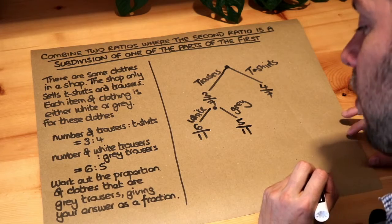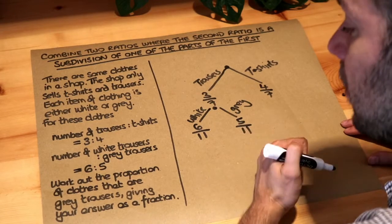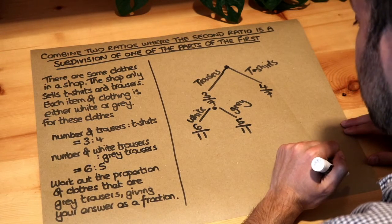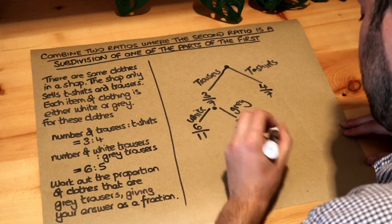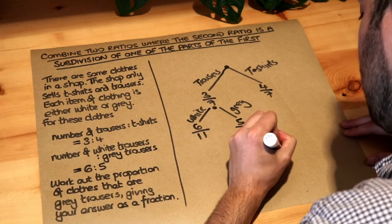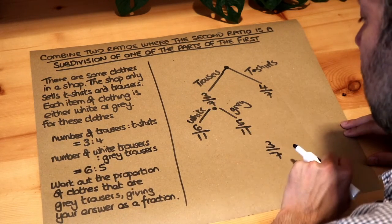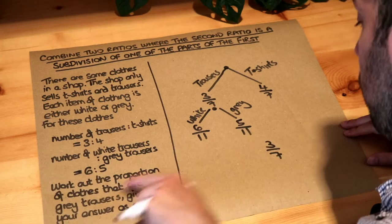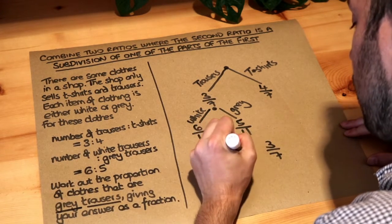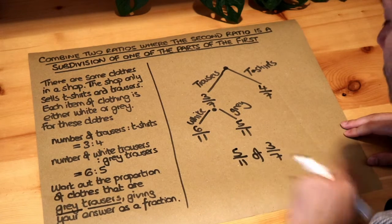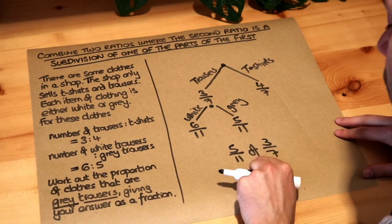We want to work out the proportion of clothes—proportion is another way of saying fraction—that are grey trousers. So of the 3/7 of the clothes that are trousers, 5/11 of those trousers are grey, which is what we want. So 5/11 of the 3/7 of the clothes which are trousers are grey trousers.